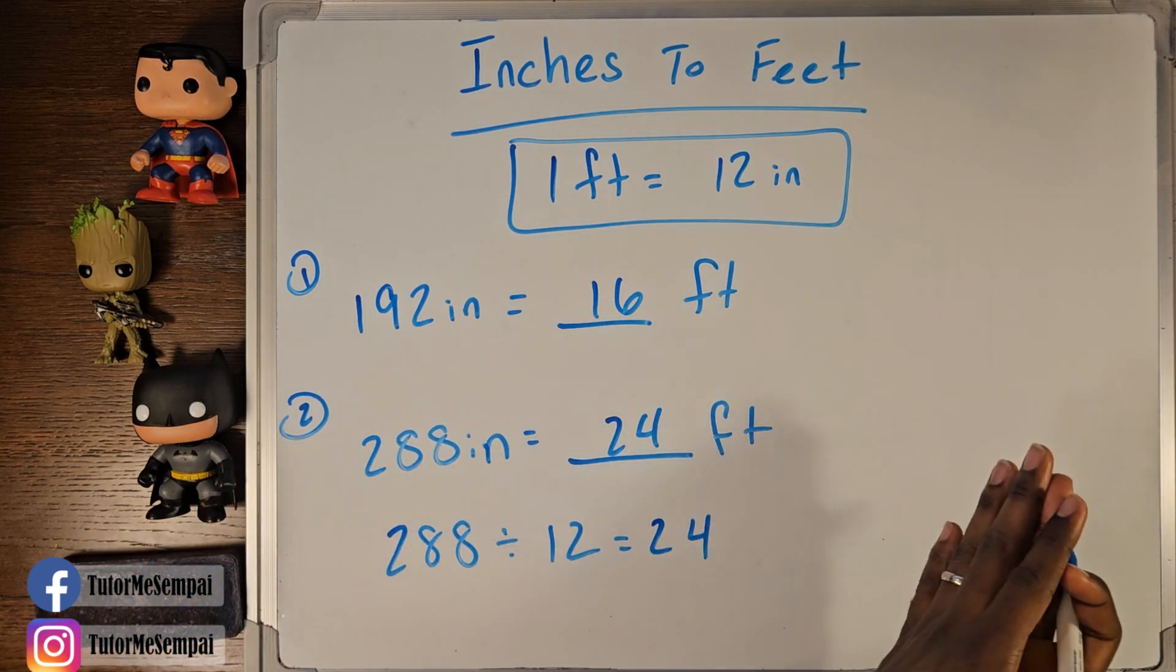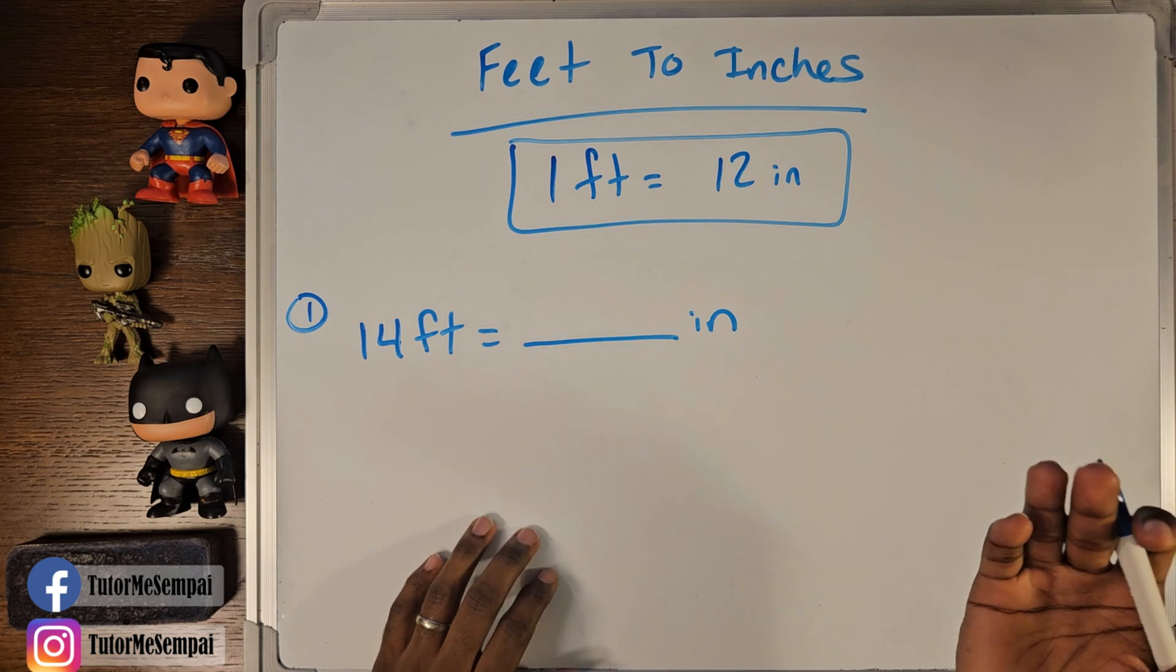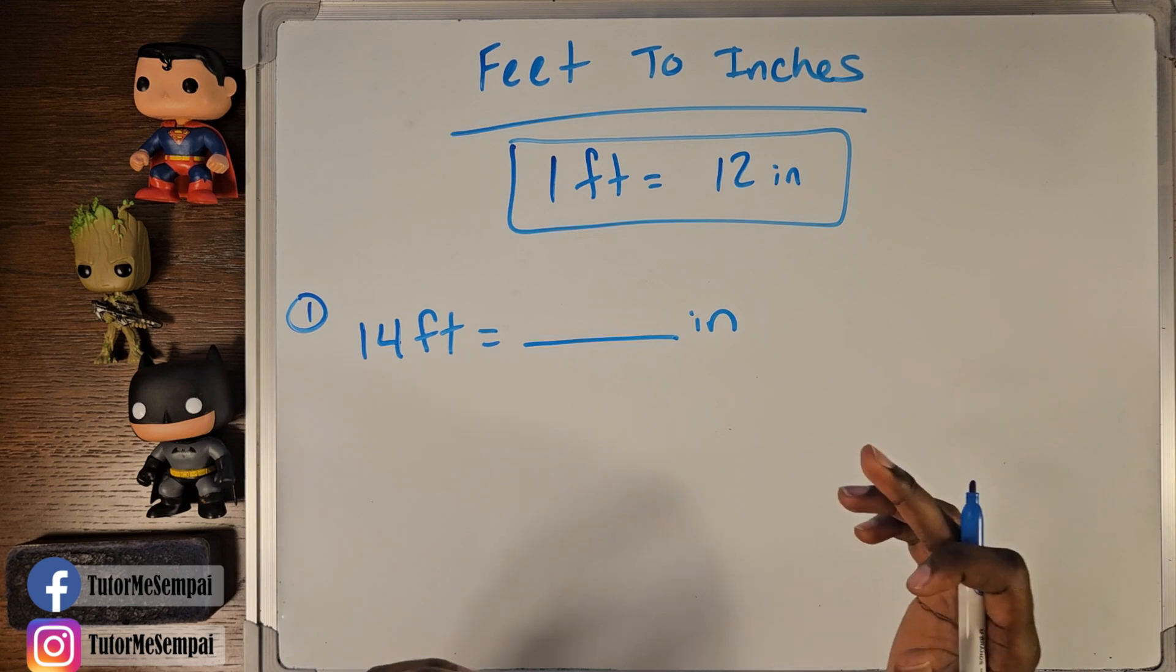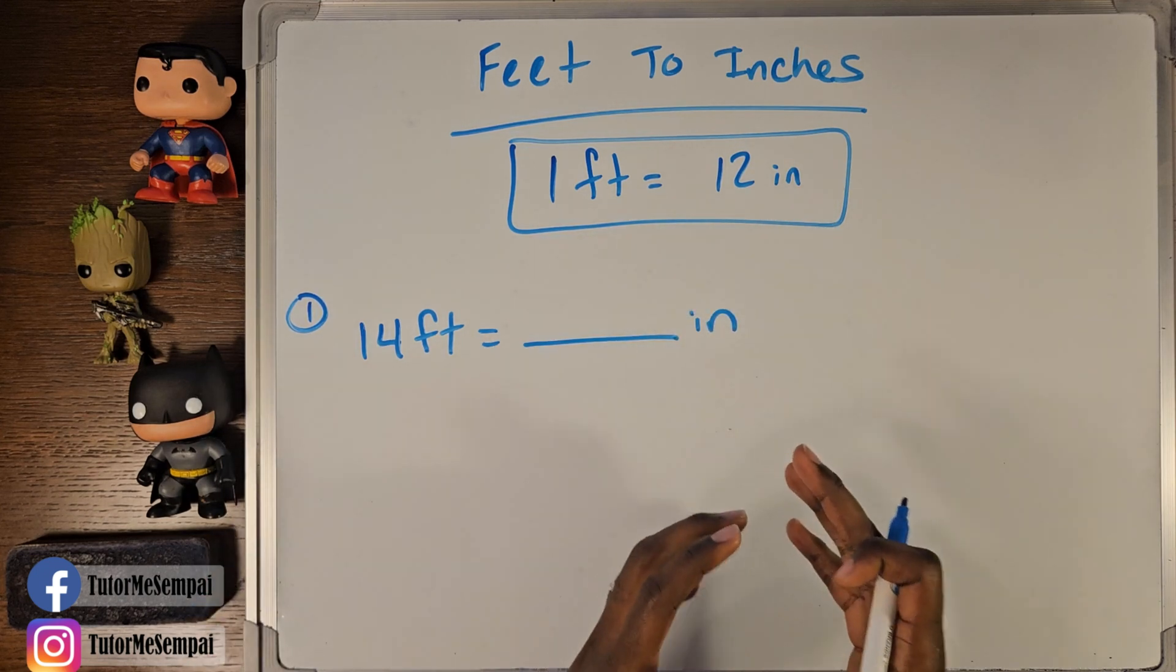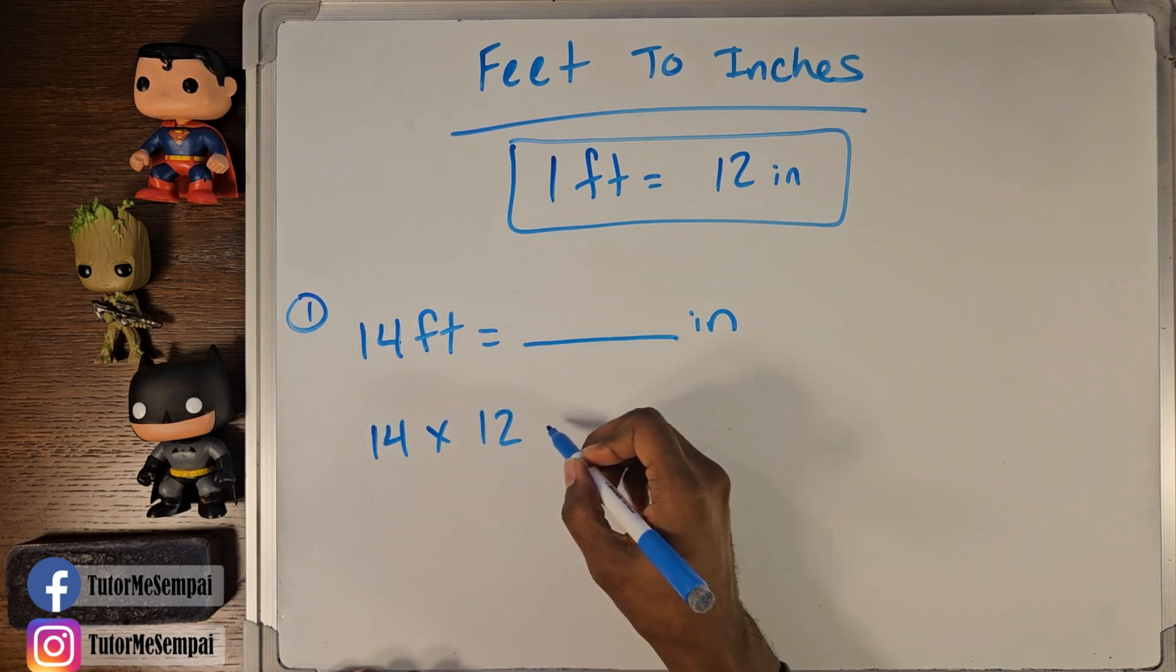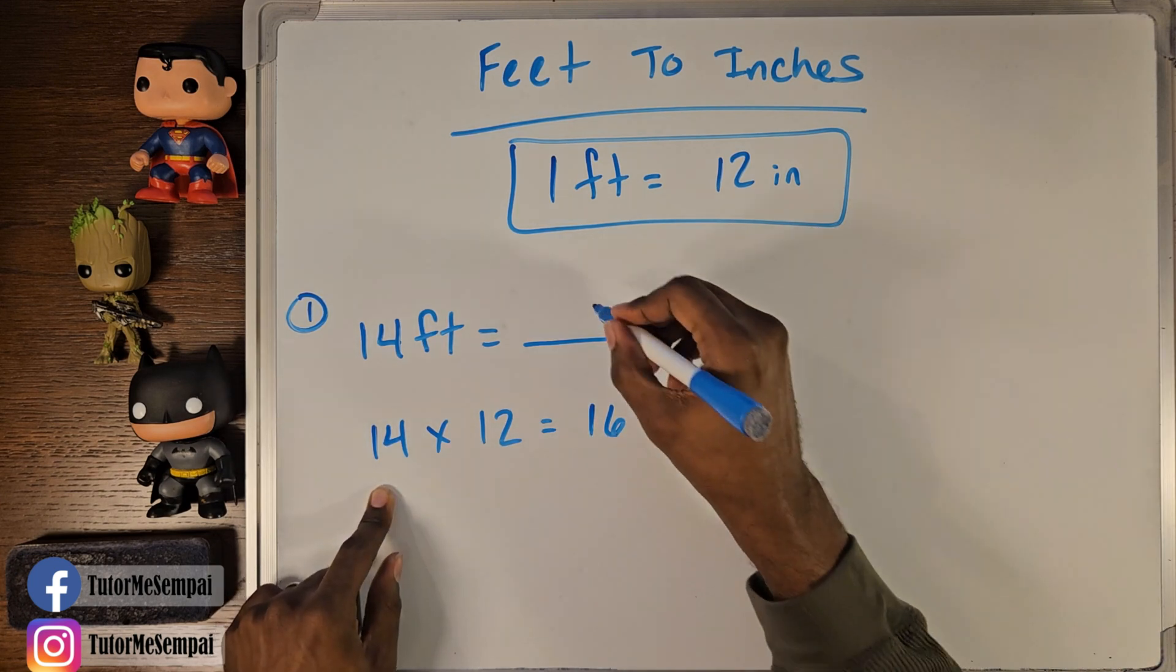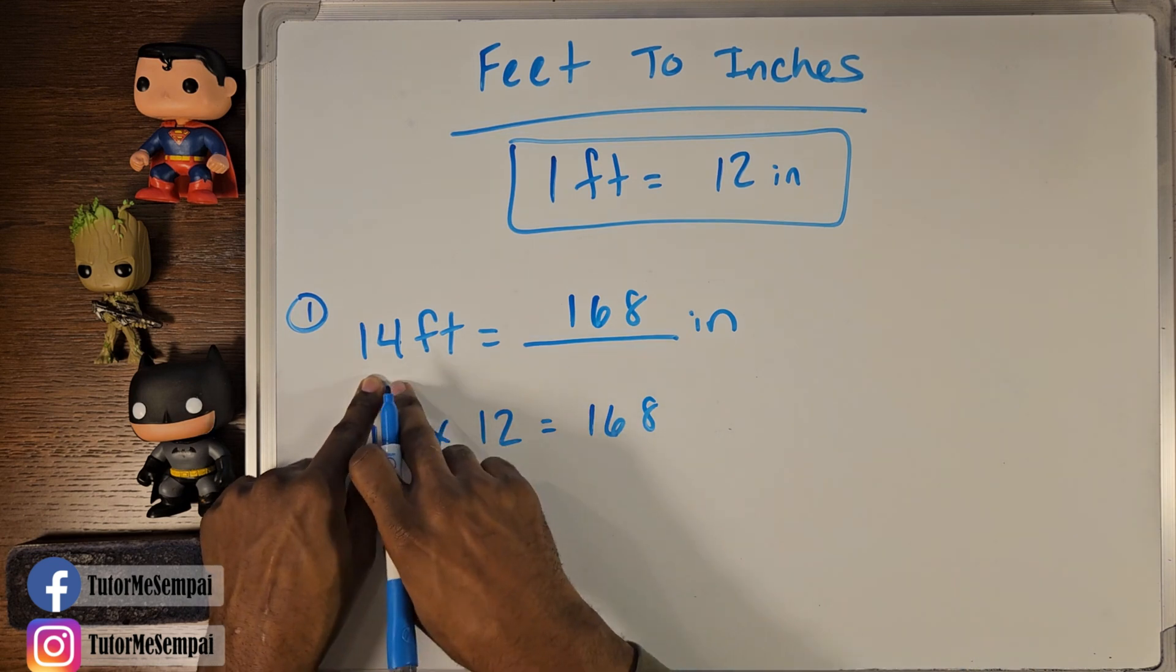So now that we've tackled inches to feet, let's talk about what we need to do in order to go from feet to inches. So let's say we were given 14 feet. And we of course know that every foot is going to equal 12 inches. What do we need to do in order to find how many inches we have when we have 14 feet? Well, we just said every foot is going to be 12 inches and we have 14 of them. That means we're going to have 14 groups of 12. That's just telling us to multiply 14 times 12. If we were to multiply 14 by 12, we would get 168. And that's going to be how many inches we have when we have 14 feet. So 168 inches is what you get when you have 14 feet.